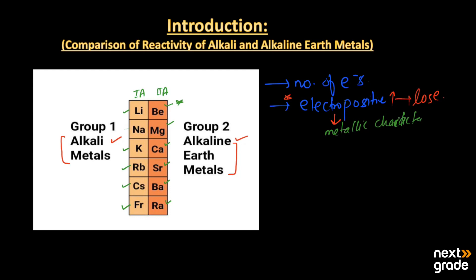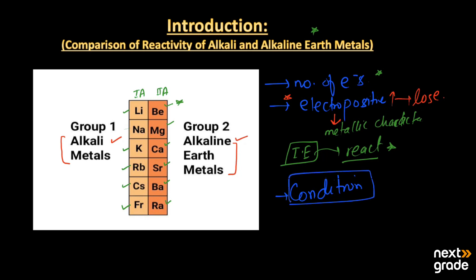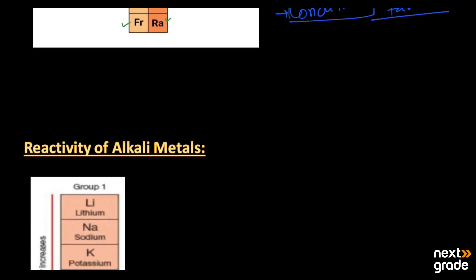Other factors include whether the metals have high or low ionization energy, and the substance they are going to react with. These factors — ionization energy, metallic character, electropositive character, and the number of electrons — all affect reactivity. If conditions are favorable for reactions to take place, the reaction will happen smoothly; if conditions are not favorable, the reaction will not take place.